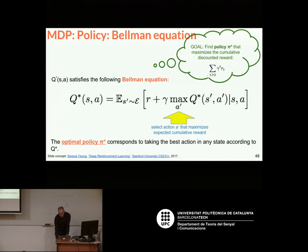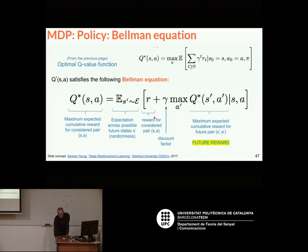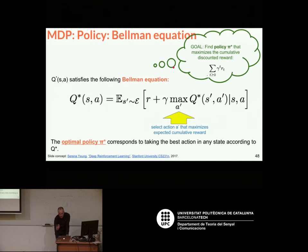If we want to find the policy that maximizes this discounted reward, actually what we want to do — just notice that if you want to maximize the cumulative discounted reward, you're going to take the actions that also maximize the expected cumulative reward in the future. That's kind of obvious but that's how the formalism works. In the end, the optimal policy corresponds to taking the best action in any state according to this Q value function.